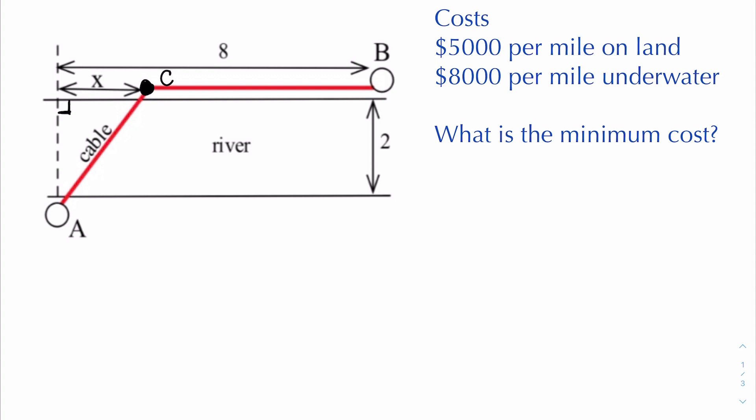In this particular problem, if you follow along the red, we're trying to find the optimal path to go from point A to point B by selecting a point along the shoreline so that we minimize the cost of laying the cable. What we know is that every mile on land costs $5,000 and every mile going underwater costs $8,000. Point A is two miles from the shoreline and we're talking about a distance of eight miles along the shoreline, so we're trying to find the optimal path.